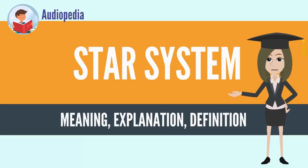The star system or stellar system is a small number of stars that orbit each other, bound by gravitational attraction. A large number of stars bound by gravitation is generally called a star cluster or galaxy, although, broadly speaking, they are also star systems.